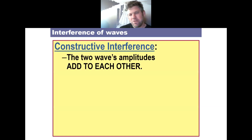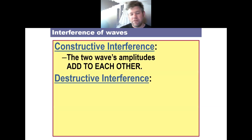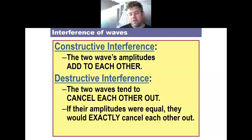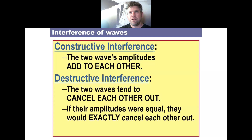To sum it up: constructive interference — two wave amplitudes add together, whether that's the height of the crest or the depth of the trough. Destructive interference — the two waves cancel each other out; if their amplitudes are equal, you get a perfectly flat surface.